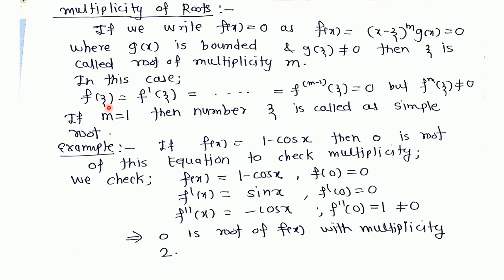In this case, we get f(ξ) = f'(ξ) = ... = f^(m-1)(ξ) = 0, where the derivatives of order first, second, through m-1 all equal zero. But f^(m)(ξ), the mth derivative at point ξ, is not equal to zero. Then ξ is called a root of multiplicity m.